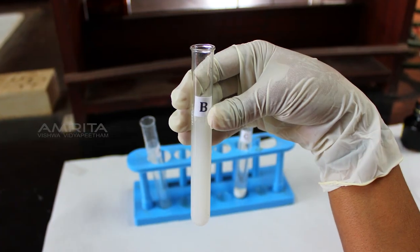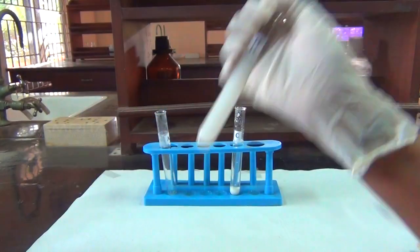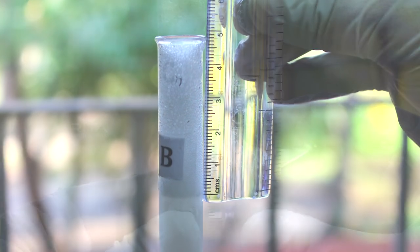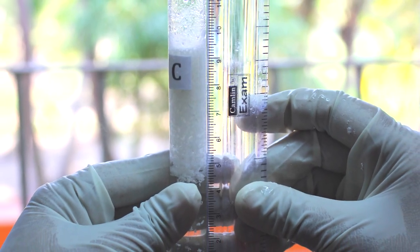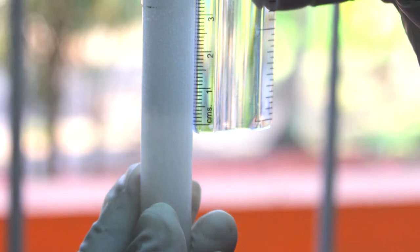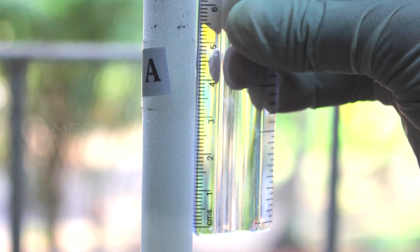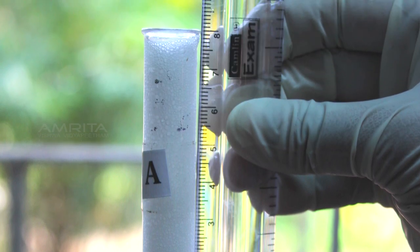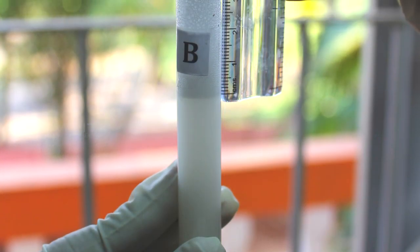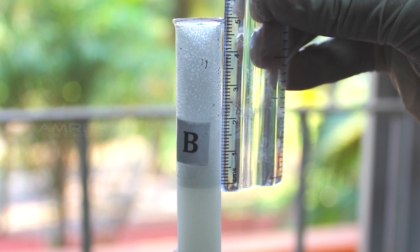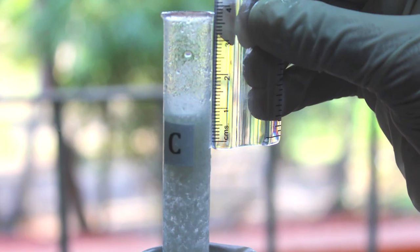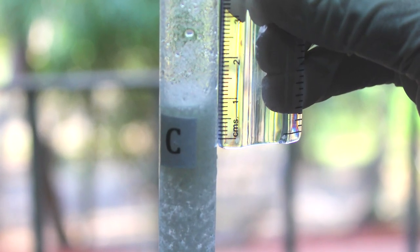Similarly, take the other two test tubes and repeat the same steps and measure the length of the foam and the final length of the soap solution. Soap solution in test tube A produces the maximum length of lather. The solution in test tube B produces a smaller length of lather and the solution in test tube C produces the minimum length of lather.